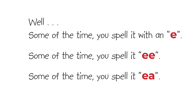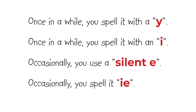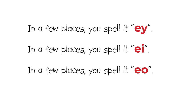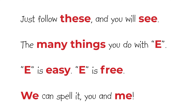Well, some of the time you spell it with an E. Some of the time you spell it E-E. Some of the time you spell it E-A. Once in a while you spell it with a Y. Once in a while you spell it with an I. Occasionally you use a silent E. Occasionally you spell it I-E. In a few places you spell it E-Y. In a few places you spell it E-I. In a few places you spell it E-O. Just follow these and you will see the many things you do with E.